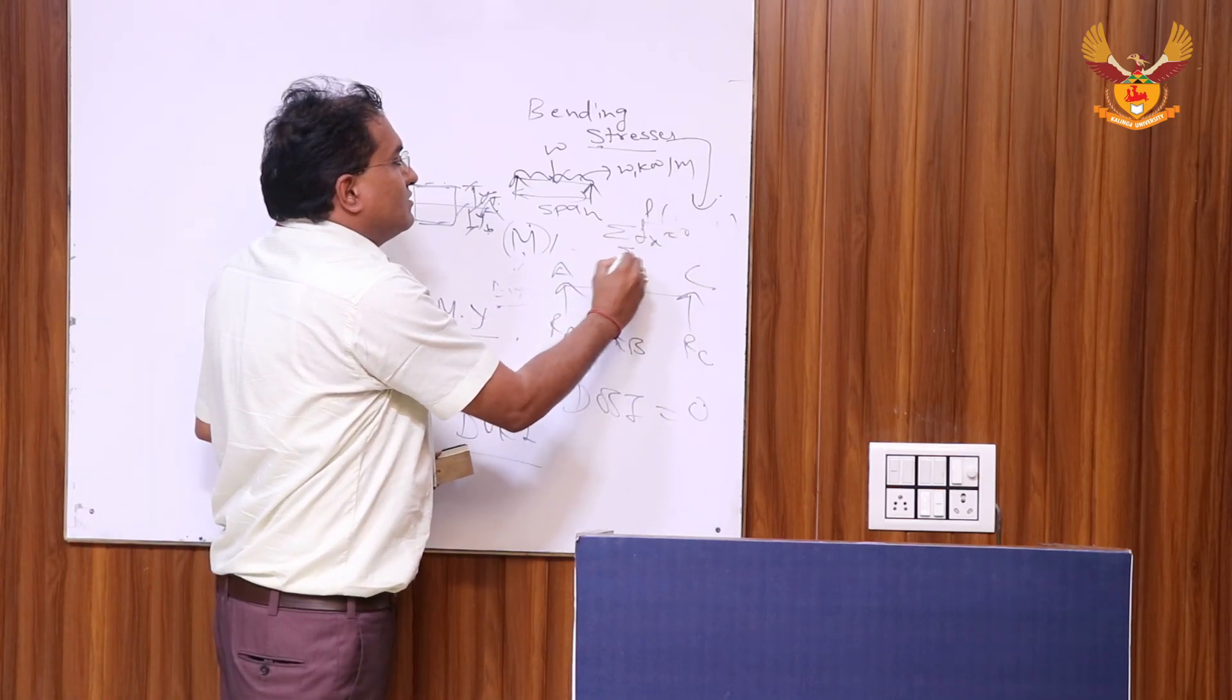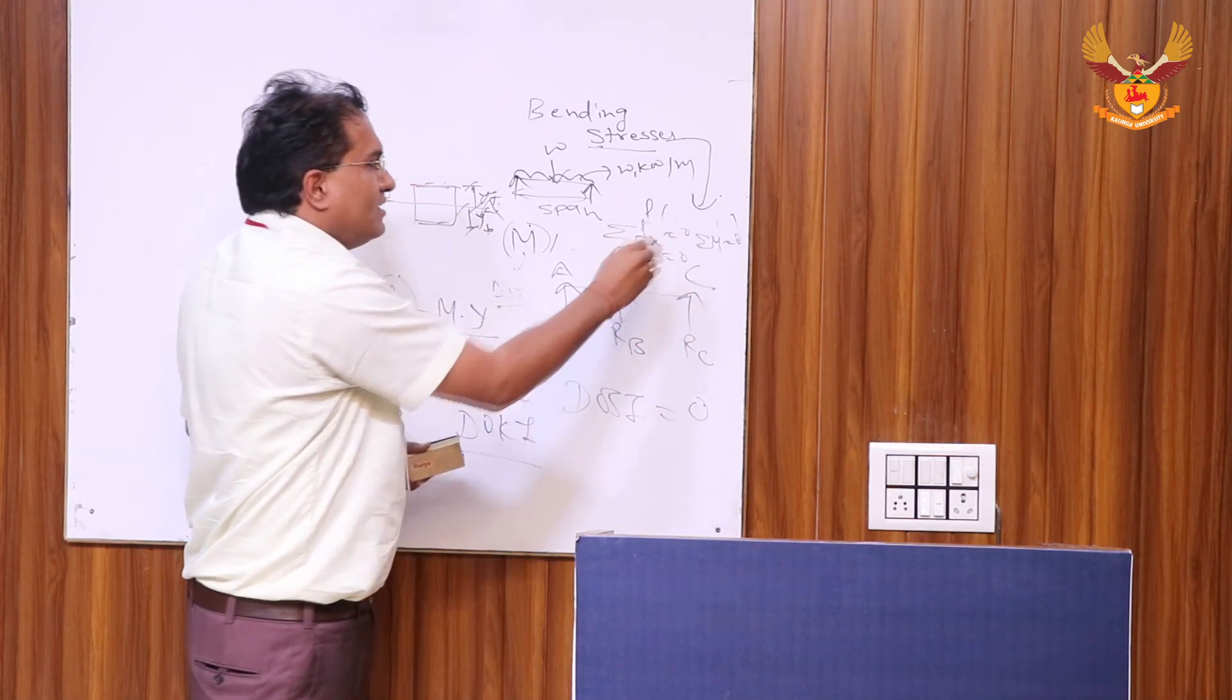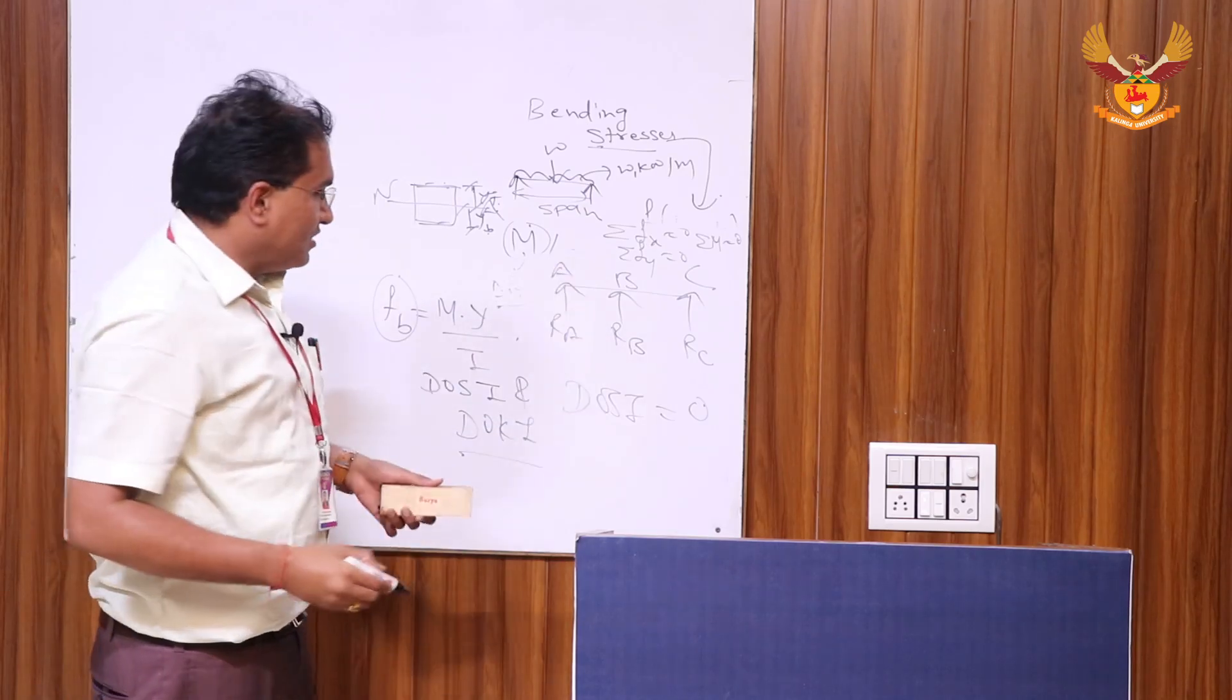Summation FX equal to 0, summation FY equal to 0, summation moment equal to 0. These are the three equations of equilibrium. And unknowns here, which I am abbreviating by U, are 3.